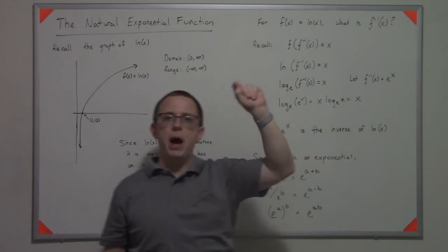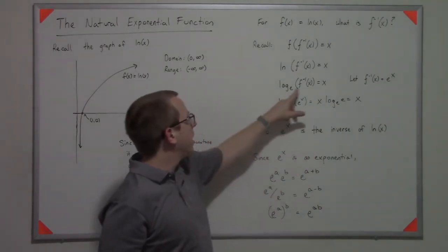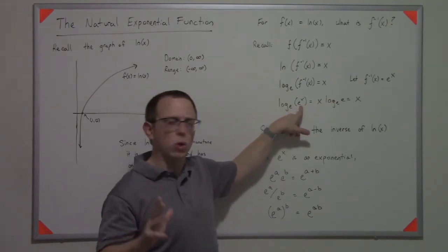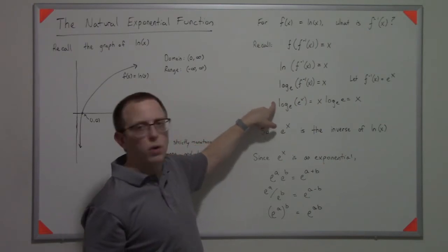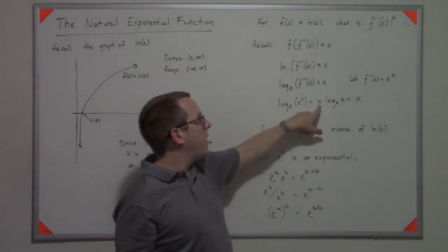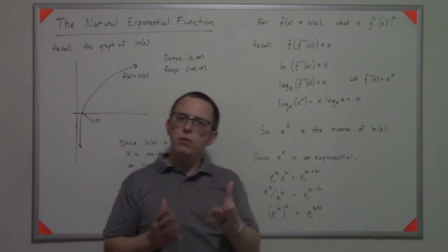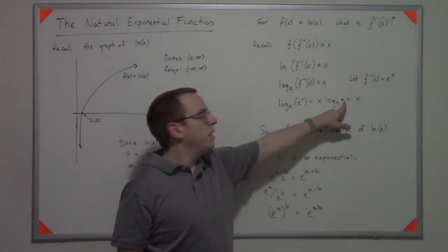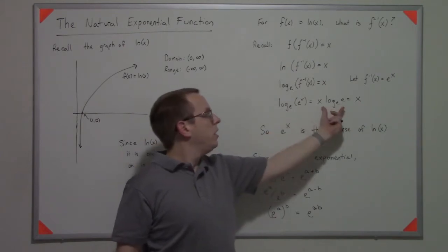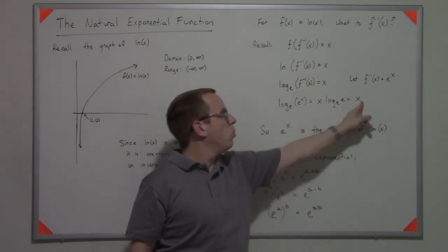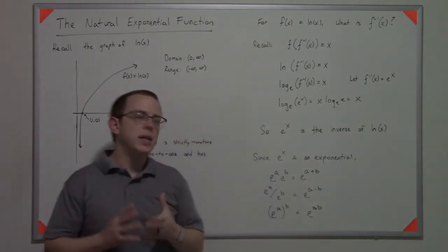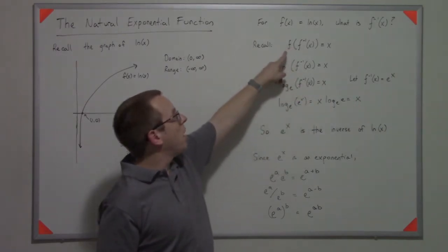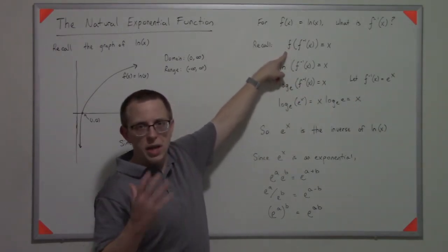So if I put that inside the natural log, log base e of e^x, and I use the rules for logarithmic functions, I can pull that x to the front. And then I have x times log base e of e. And if you remember the other rule of logs for arbitrary bases, it's that if the base and the argument match, this is just equal to 1. So we have x times 1, which is x. So what that tells me is that the natural log of e to the x is x, which satisfies our original inverse condition.